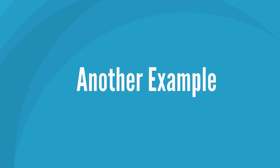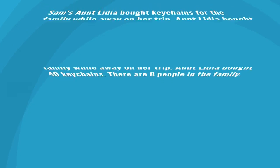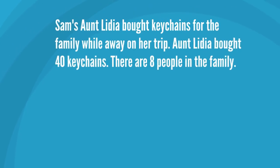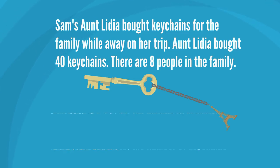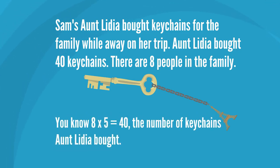Another example. Sam's Aunt Lydia bought keychains for the family while away on her trip. Aunt Lydia bought 40 keychains. There are 8 people in the family. You know that 8 times 5 equals 40 — the number of keychains Aunt Lydia bought.